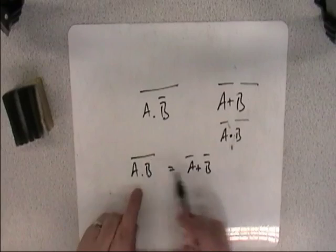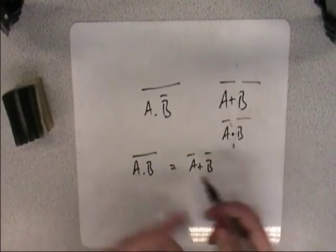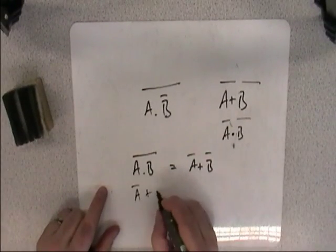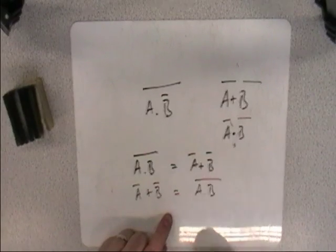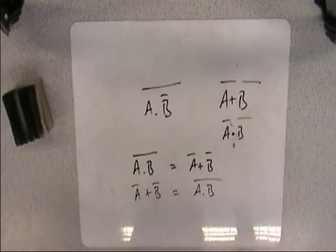Both ways around it works. Whether you've got an AND or an OR, whether you've got a bar over both or a bar over a single, the same thing applies. If you have separate bars, you can join them up, so long as you change the sign. It works both ways, and it's as simple as that.